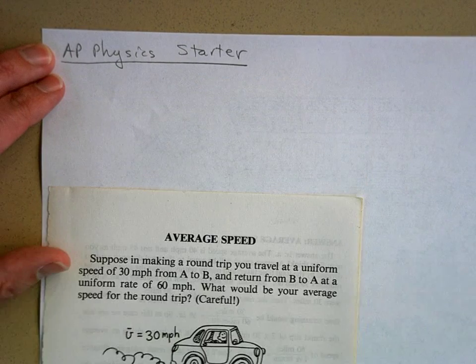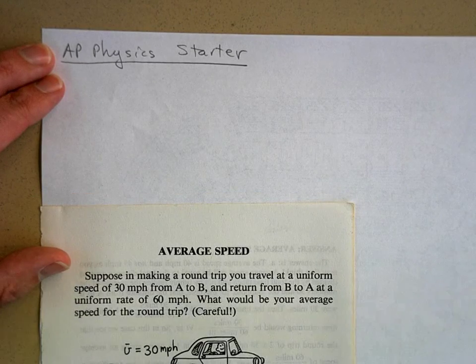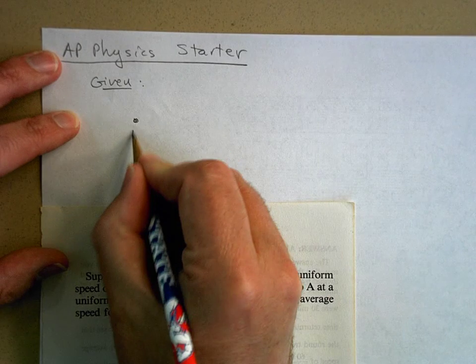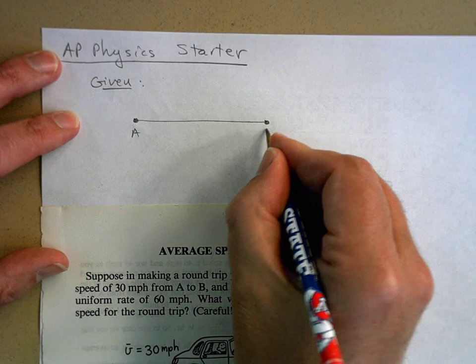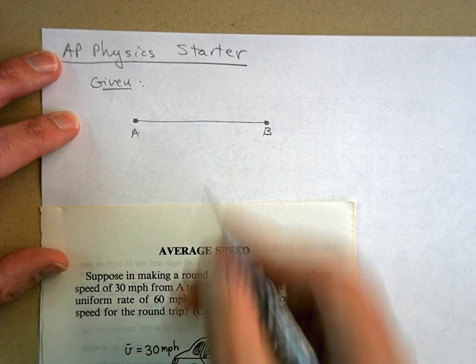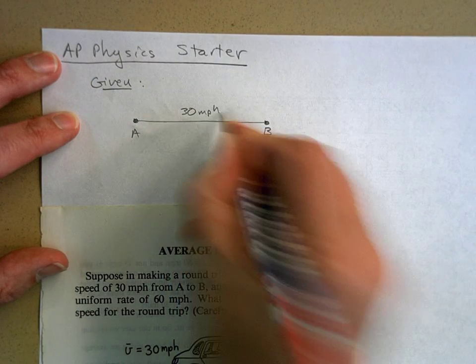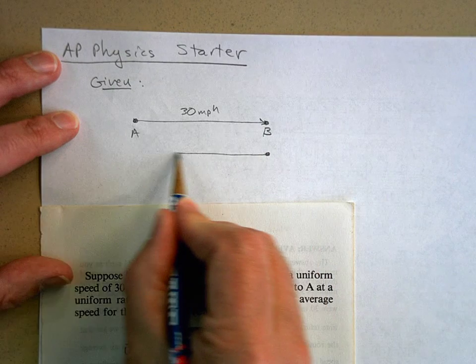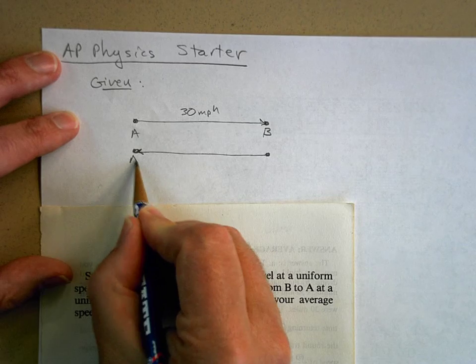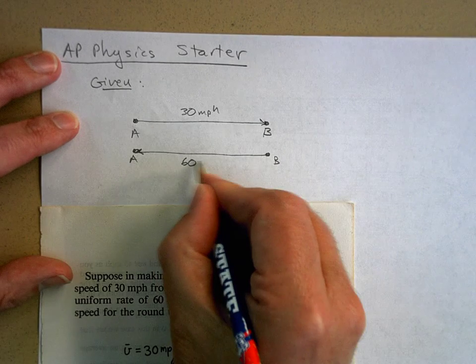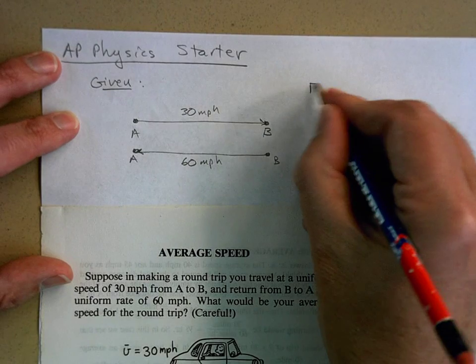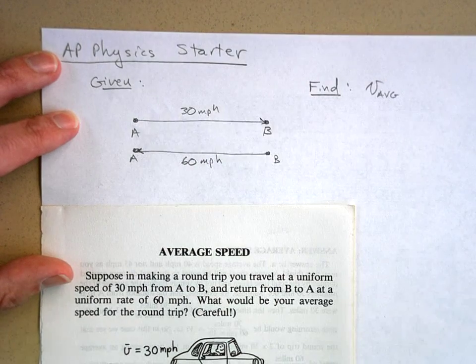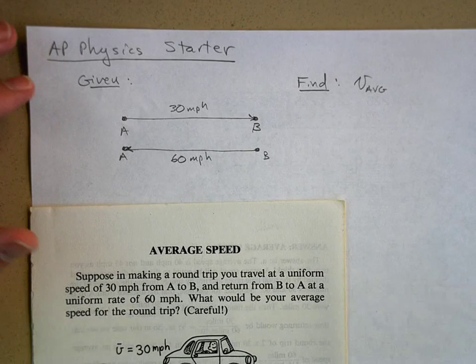So think about that. I'm going to set this problem up this way. I'm going to go from A to B going 30 miles per hour, and then from B back to A averaging 60 miles per hour. We want to find the average speed for the entire problem.